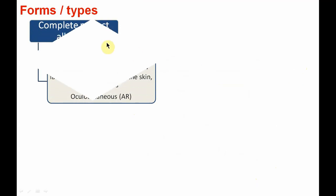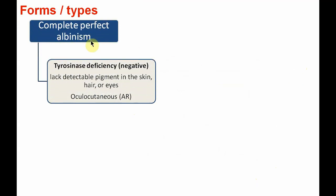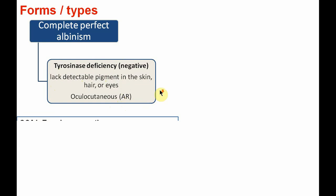Now let us see the forms or types of albinism. The first is complete perfect albinism, also called tyrosinase deficiency or tyrosinase-negative form. Here there is a lack of detectable pigment in the skin, hair, or eyes. It is also called oculocutaneous albinism, inherited as autosomal recessive. There are four types of oculocutaneous albinism.